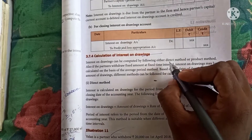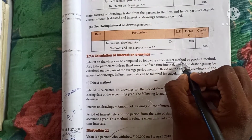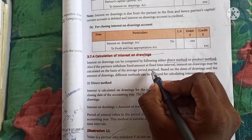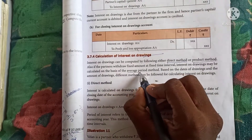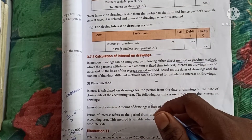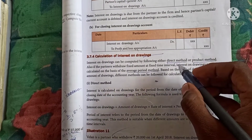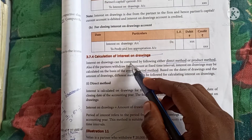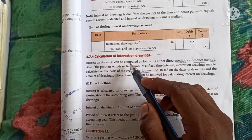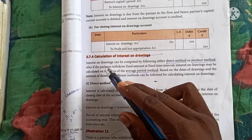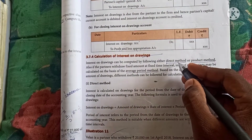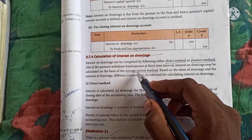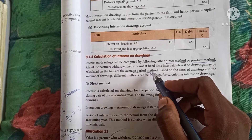So, three methods: Direct method, Product method, and Average period method. In these three methods, we will do some examples. If you are interested in this method, you will do the direct method. This is the product method. This is the average period method.